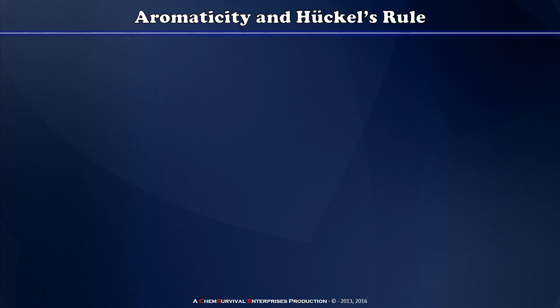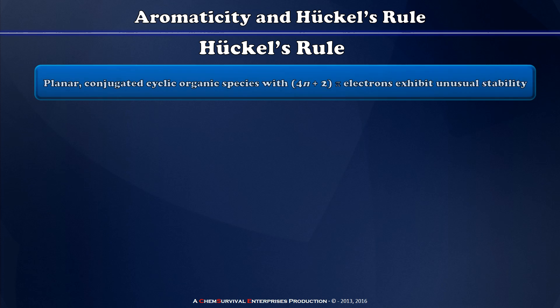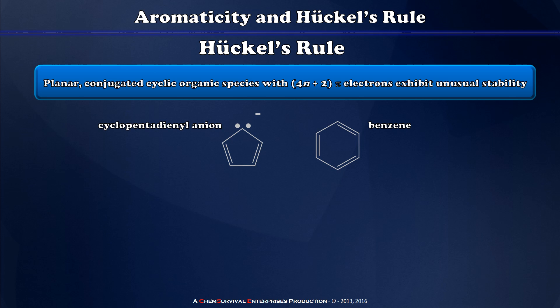Welcome to a brief discussion of aromaticity, anti-aromaticity, and Huckel's rule. Huckel's rule states that conjugated cyclic organic species with 4n plus 2 pi electrons exhibit an unusual stability and tendency to be planar. Examples of these kinds of species include cyclopentadienyl anion and the benzene molecule.